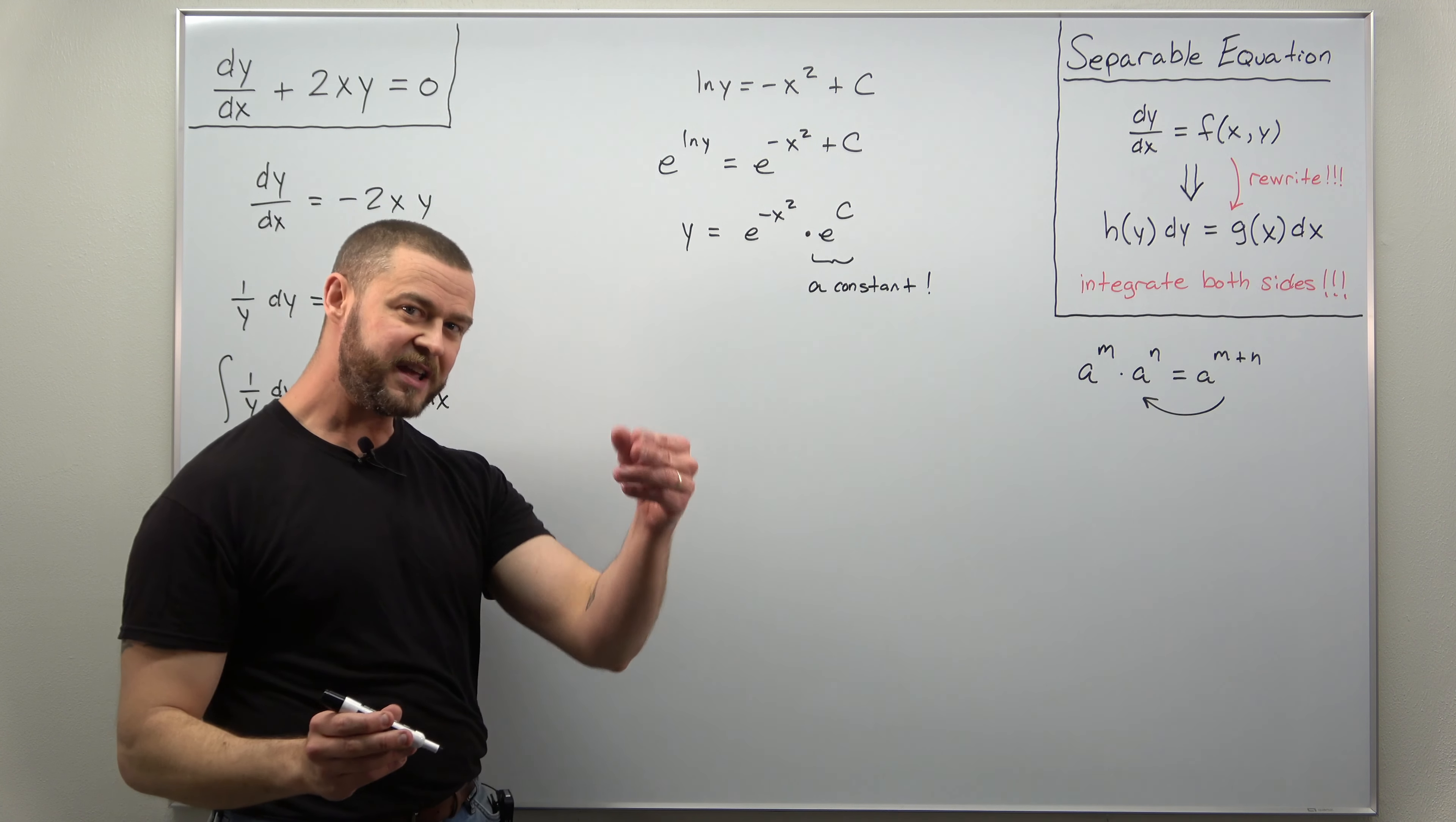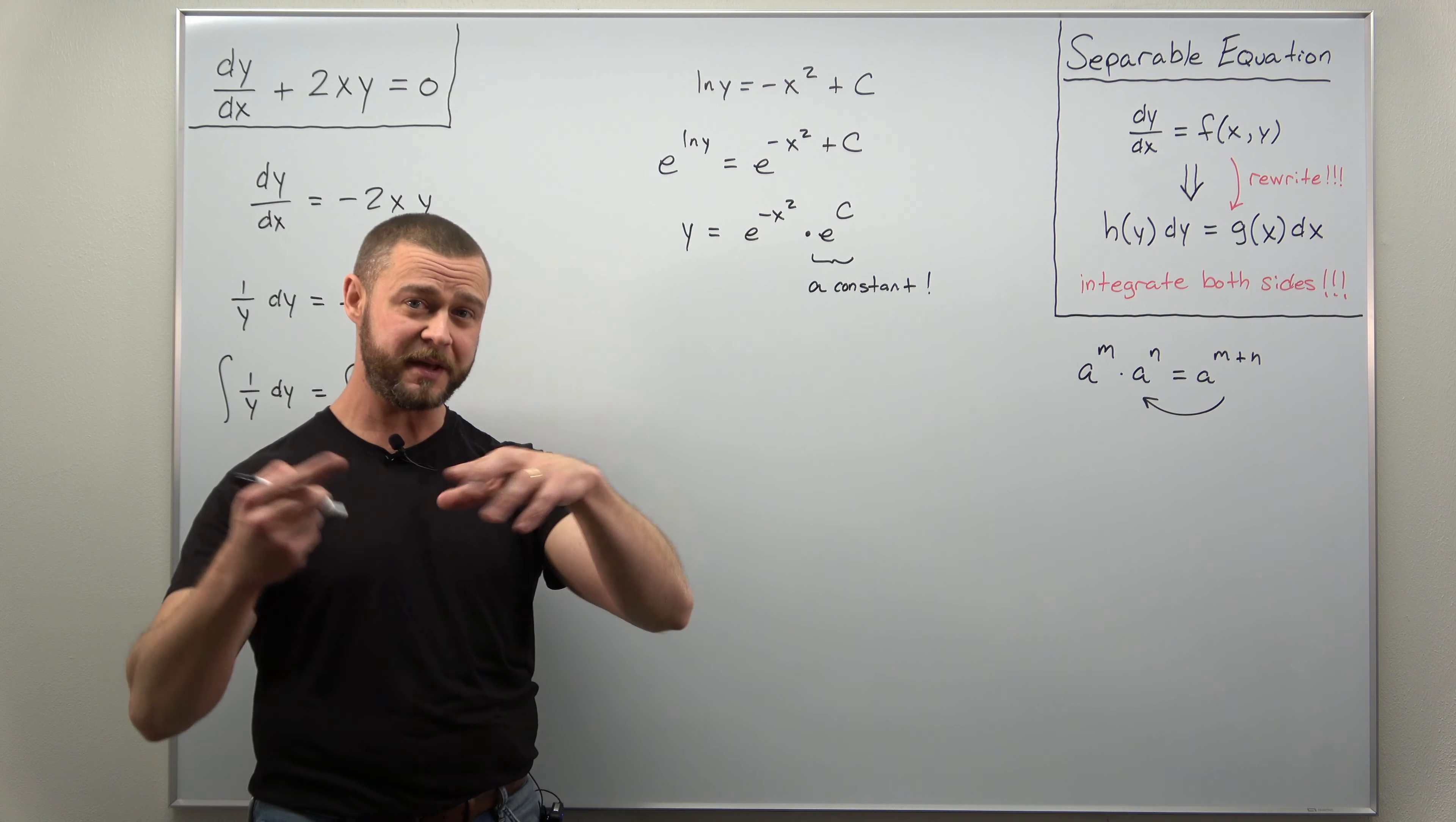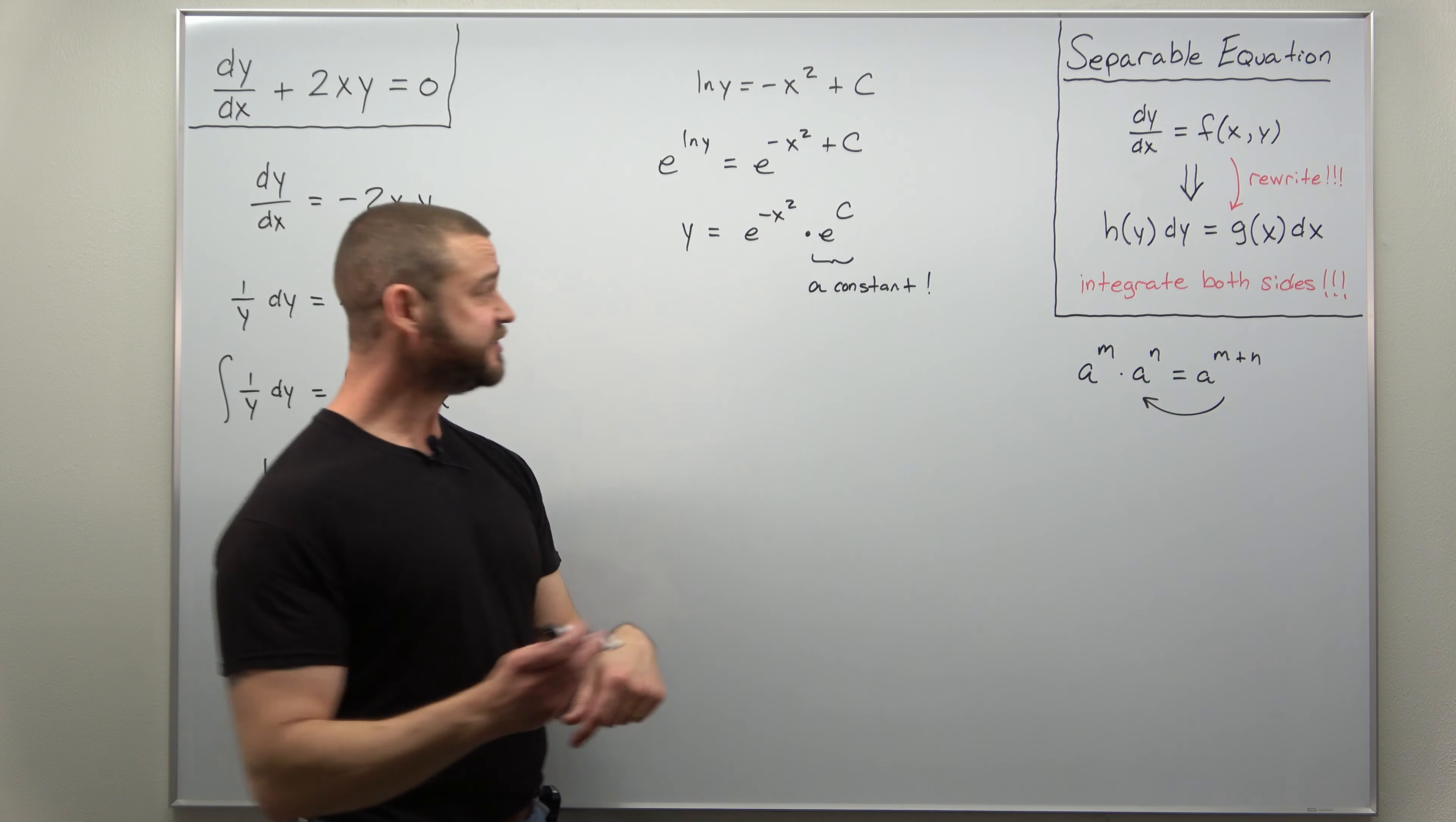Now technically we should give that a different name. Maybe call it d or c1 or c2. But a lot of times when you have these combinations of constants being multiplied, exponentiated in various combinations, we're just going to write e to the c as c.